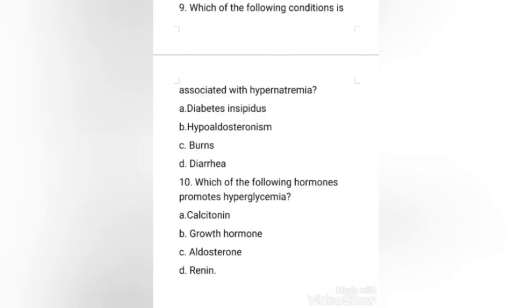Next question: which of the following conditions is associated with hyponatremia? Options: diabetes insipidus, hypoaldosteronism, burns, or diarrhea. The right answer is option A, diabetes insipidus.